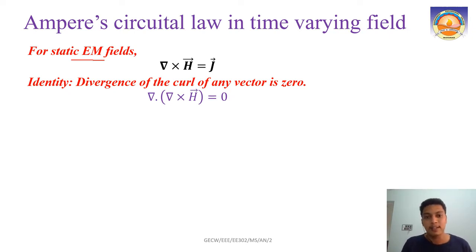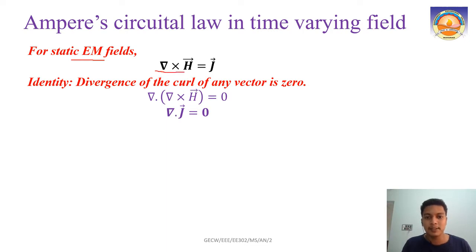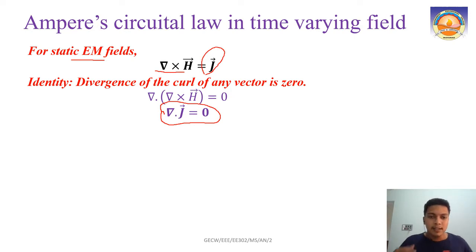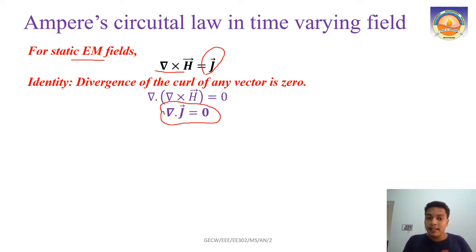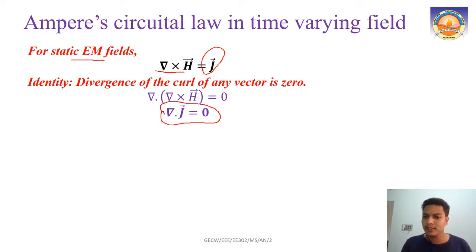Since del dot (del cross H) equals zero on the left-hand side, the right-hand side — which has the current density J — must also satisfy del dot J equals zero. So from Ampere's circuit law in the static case, we conclude that del dot J must be equal to zero.